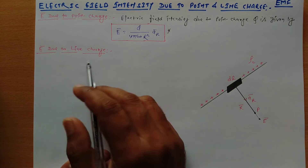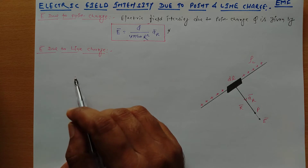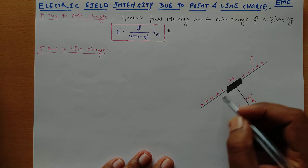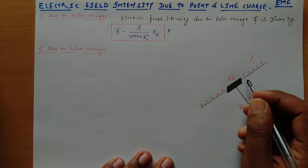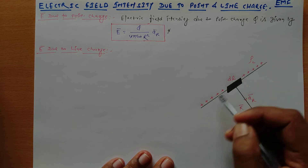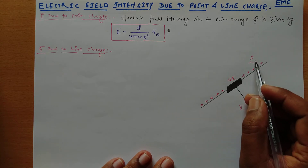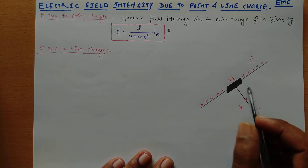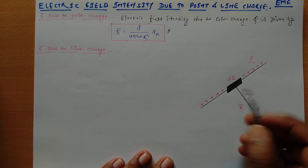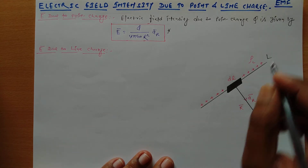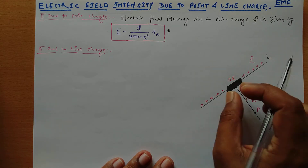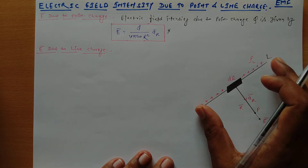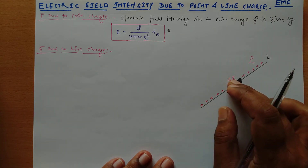Next is the electric field intensity expression for the line charge distribution. Consider I have drawn a figure here. Consider this is the length L of a particular conductor, where we have a charge distribution. Here rho L is defining the line charge density. Now consider that if we take a differential amount of the length — the total length is L and we are taking a small differential length DL.